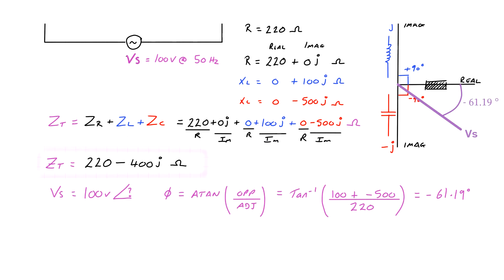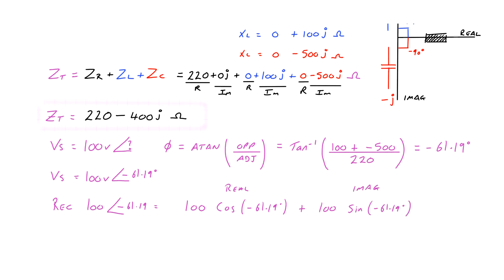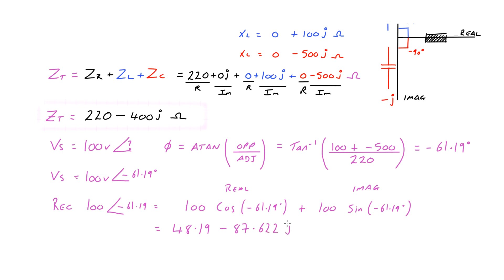Since the supply voltage lags the series current, we need to convert the supply voltage into rectangular form. The real part will be 100 times the cosine of the phase angle, and the imaginary part will be 100 times the sine of the phase angle. Using the REC function on a calculator with 100 volts and the phase angle gives us 48.19 − 87.622j volts — that's the rectangular form of the supply voltage.